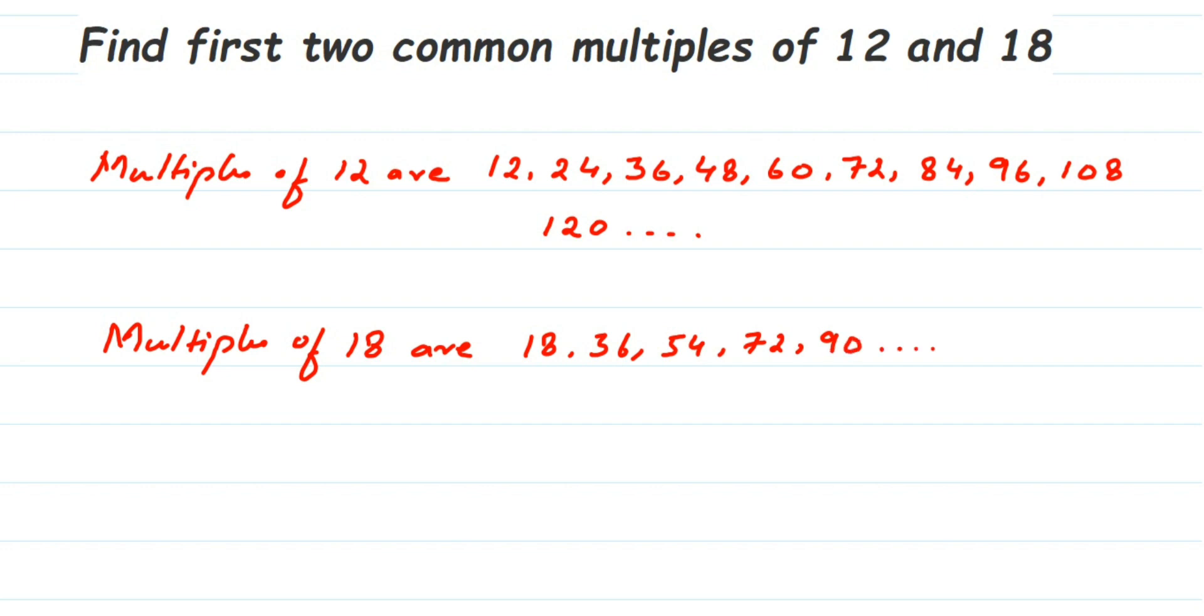I want only two common multiples and I got two common multiples here. If you check here, we got 36 which is present here and then here, and we have also got 72 and then 72. They're asking us to find out only two common multiples and I got two, so you don't have to write down further multiples of 18.